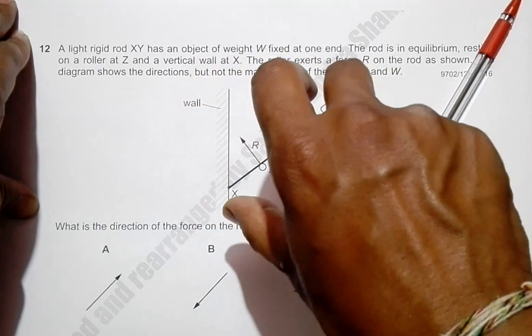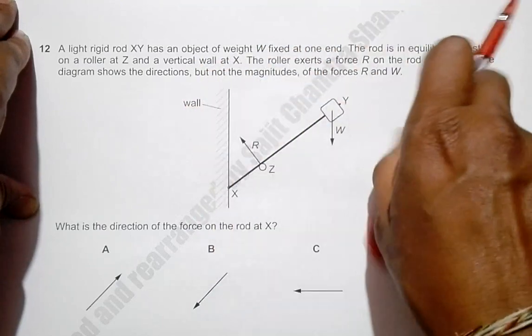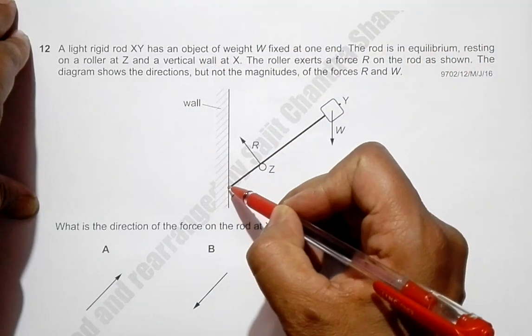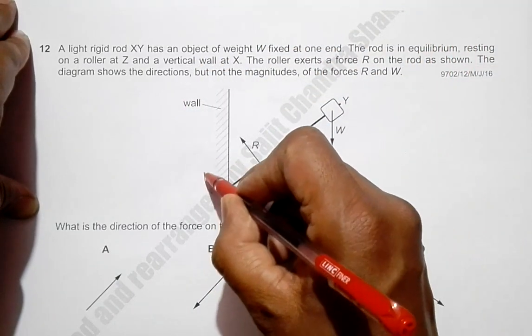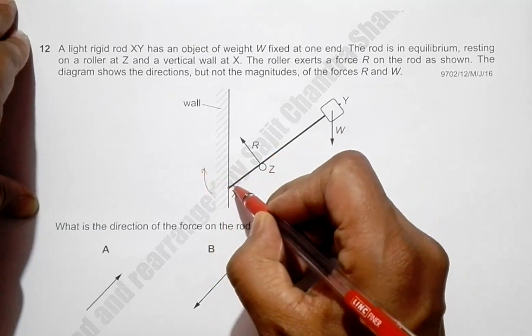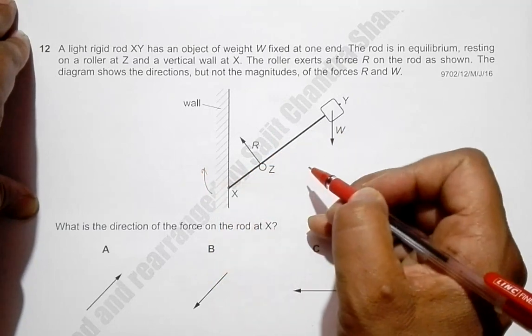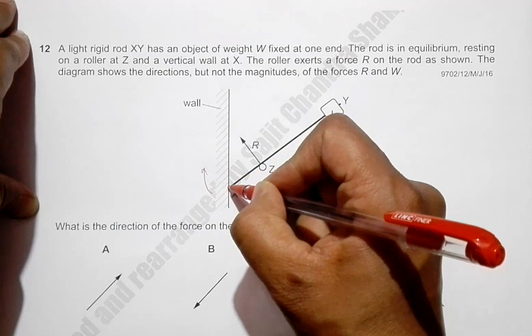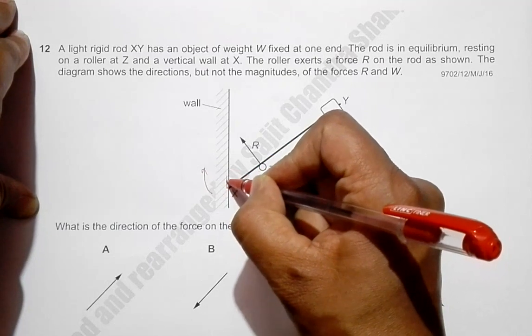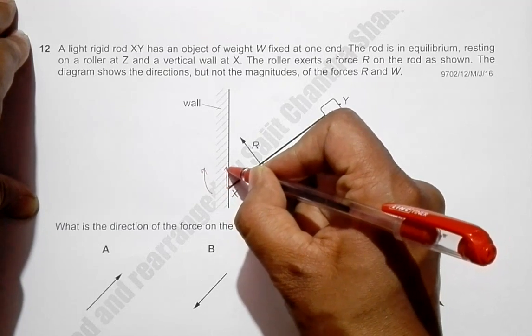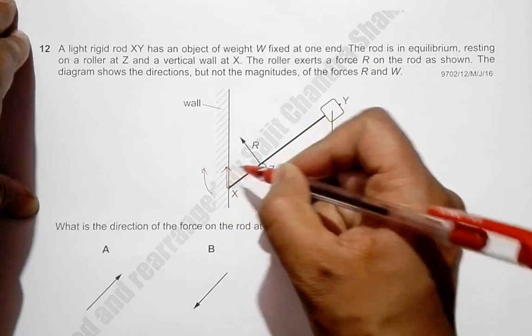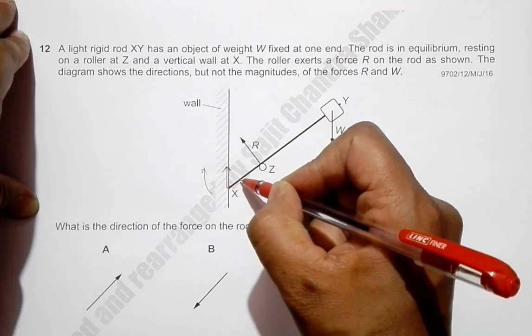So that means here there should be some sort of force applied by the rod on the wall, which means that there will be a component of the force in this direction. This is the component of the force applied by the rod on the wall.